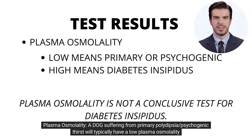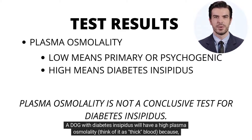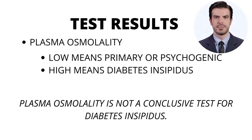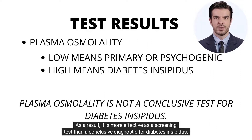Plasma osmolality: a dog suffering from primary polydipsy, or psychogenic thirst, will typically have a low plasma osmolality due to the amount of water consumed. A dog with diabetes insipidus will have a high plasma osmolality — think of it as thick blood — because in the absence of ADH, the kidneys would lose vast amounts of water, leaving the body dehydrated. It is critical to remember that the plasma osmolality test is subject to fluctuation, making it more effective as a screening test than a conclusive diagnostic for diabetes insipidus.